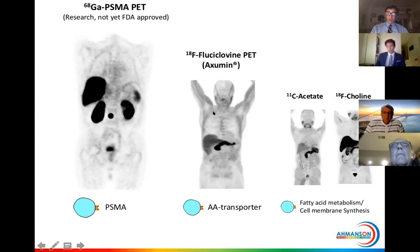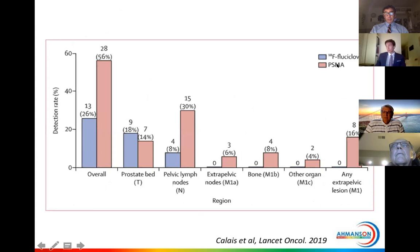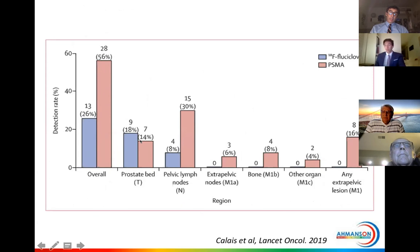The only FDA-approved tracer currently is fluciclovine, also known as Axumin. PSMA is not yet FDA-approved, but there have been lots of studies comparing Axumin with the PSMA tracer. This study, recently published in Lancet Oncology, shows the detection rate of PSMA in pink is more than twice as good overall compared to Axumin. In the prostate bed, there was a slight advantage of fluciclovine, but both tracers work reasonably well there. However, for disease outside the prostate bed — pelvic lymph nodes, extra-pelvic lymph nodes, bone — PSMA performs significantly better.